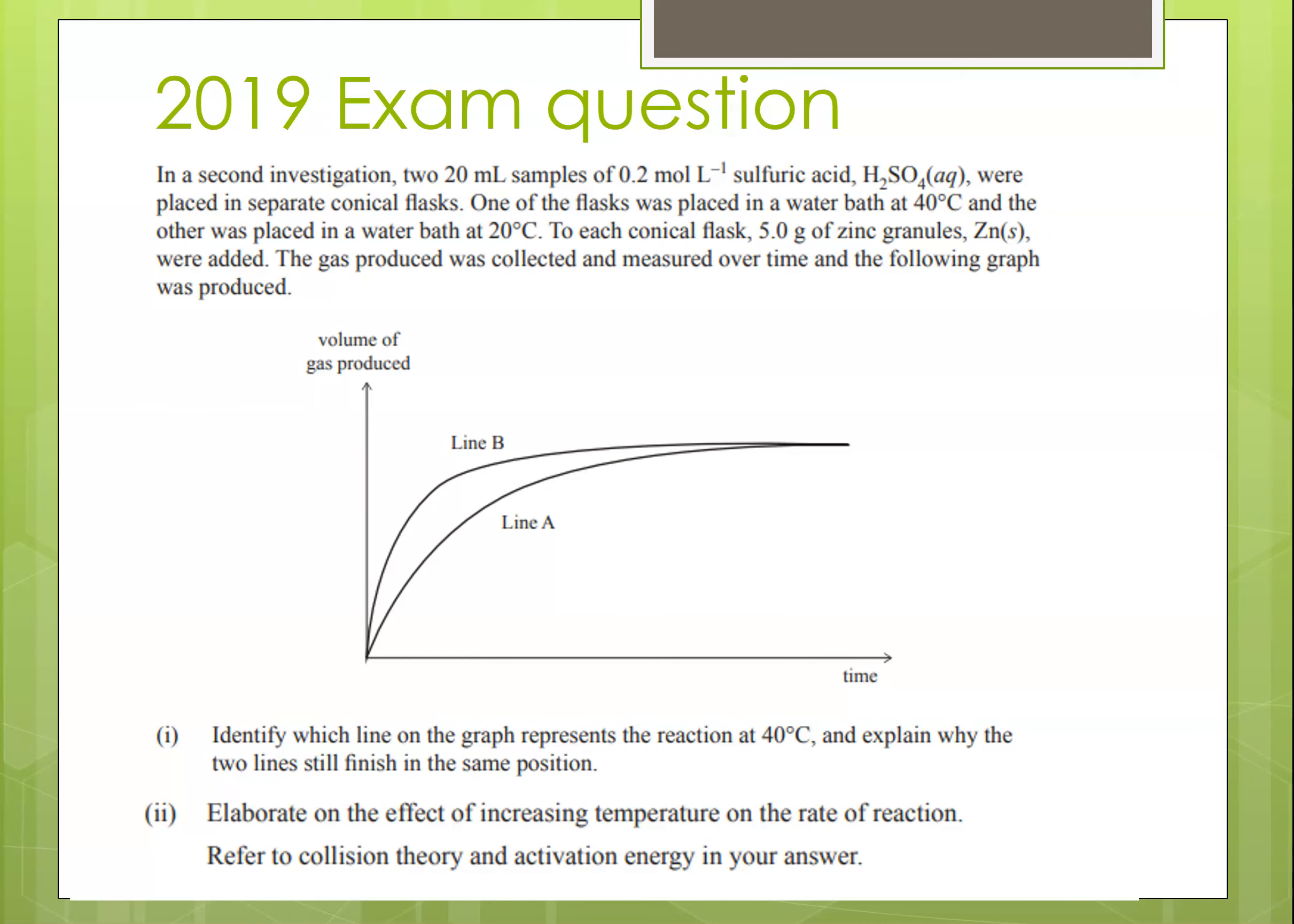Now, here is a classic NCEA exam question on rate of reaction. We've got a reaction in which two 20 ml samples of sulfuric acid were placed in separate conical flasks. One was in a water bath at 20 degrees, and the other was in a water bath at 40 degrees. To each conical flask, 5 grams of zinc granules were added. The amount of gas produced is collected and measured over time, and then graphed.